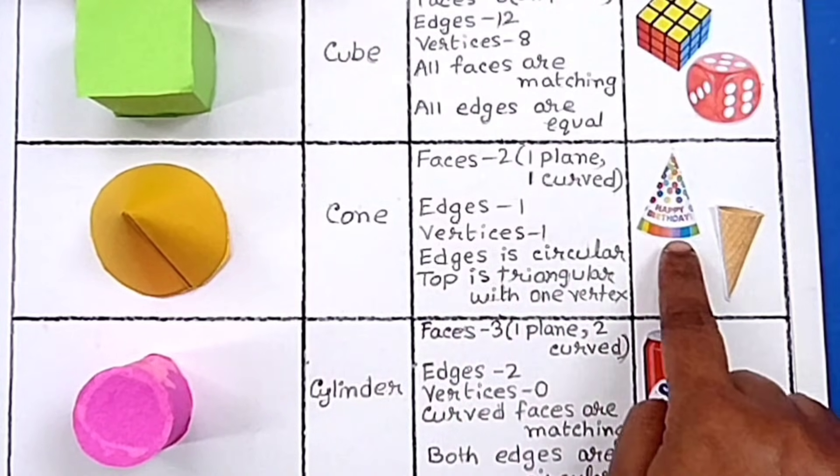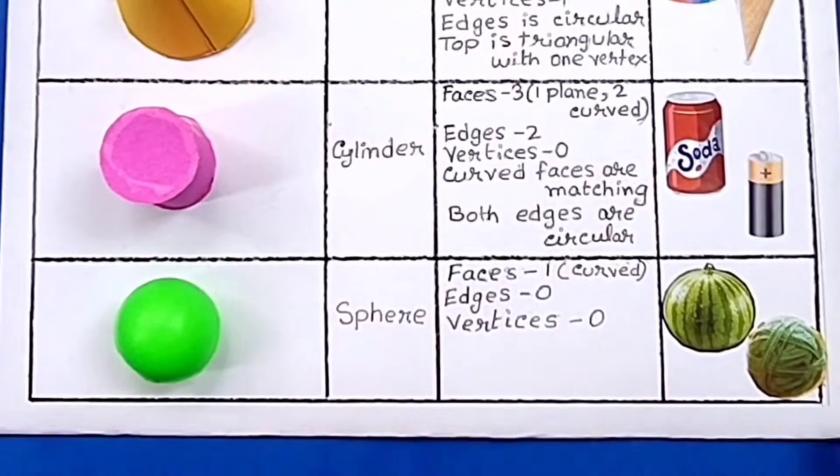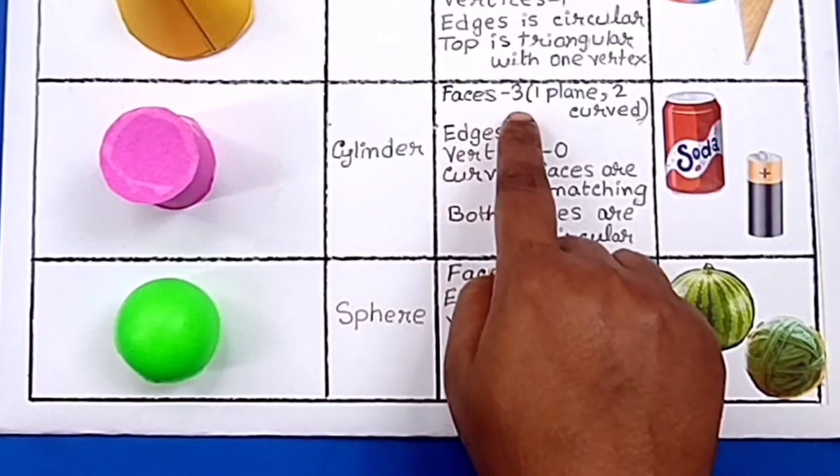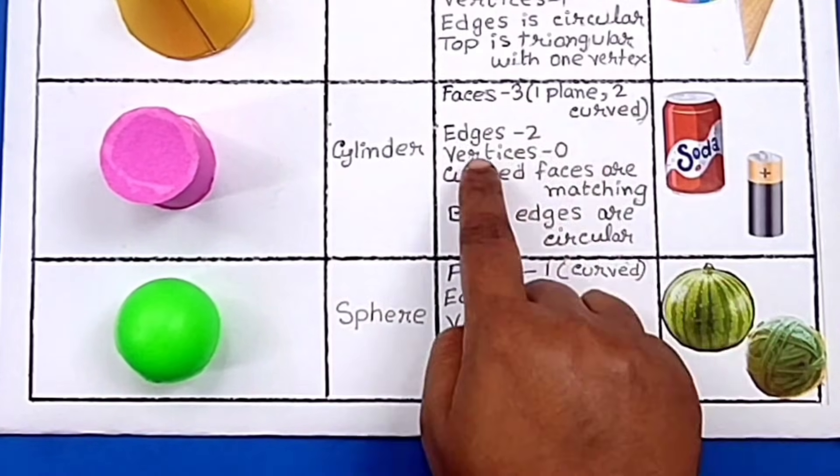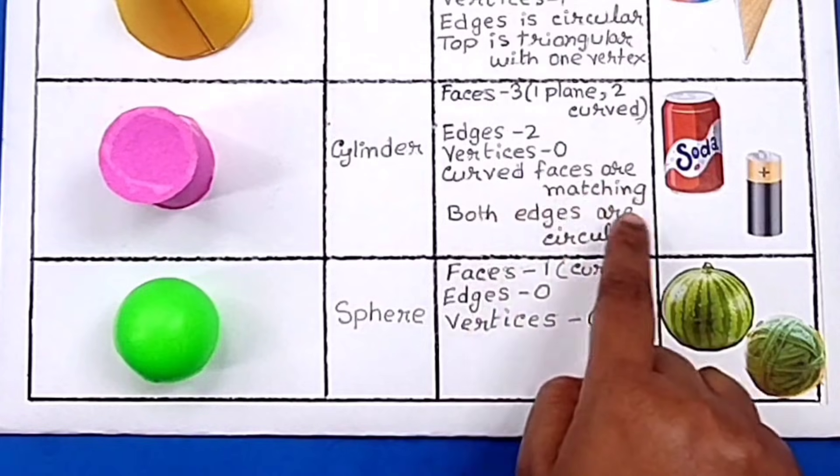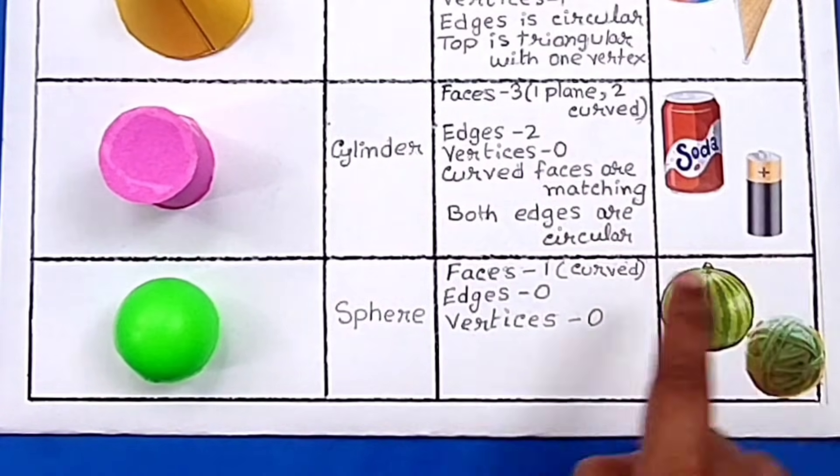Examples are birthday cap and ice cream cone. The next shape is cylinder and the properties are: faces 3, one plane and two curved; edges 2; vertices 0; curved edges are matching; both edges are circular. Examples are soda can and battery.